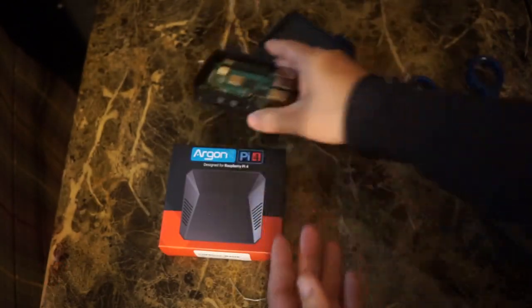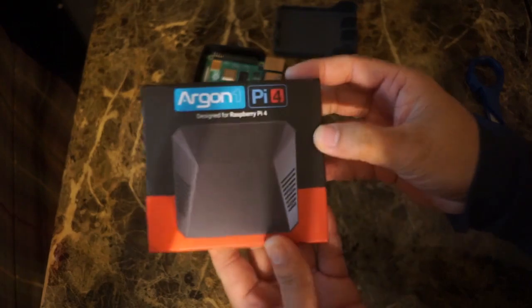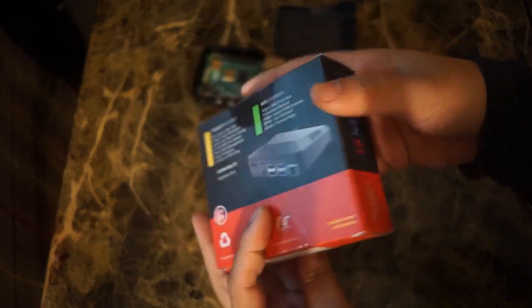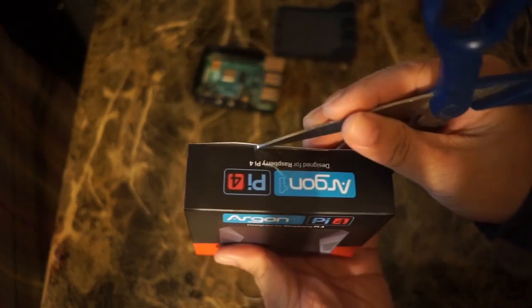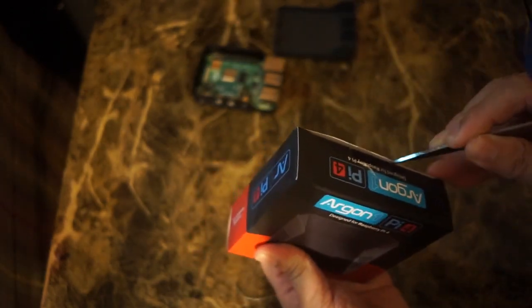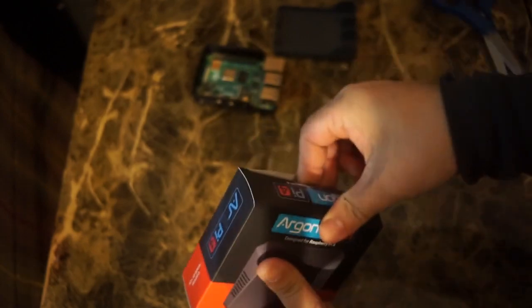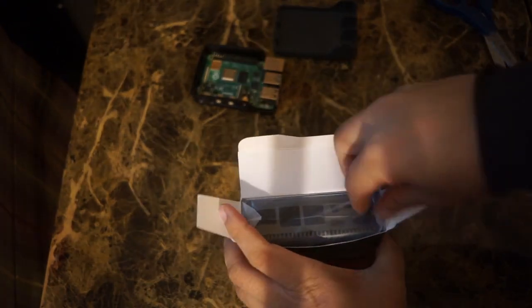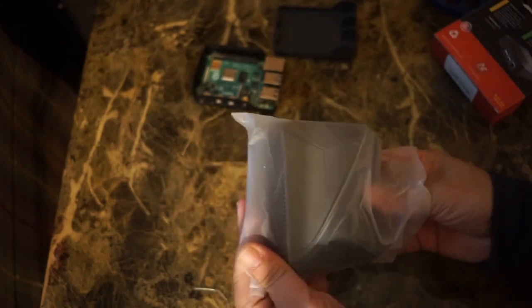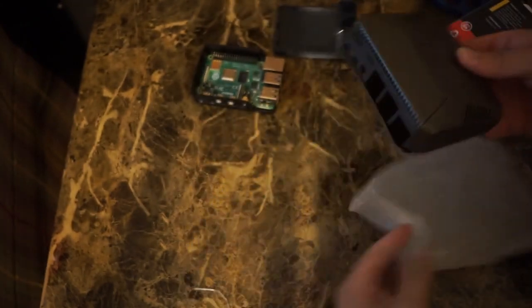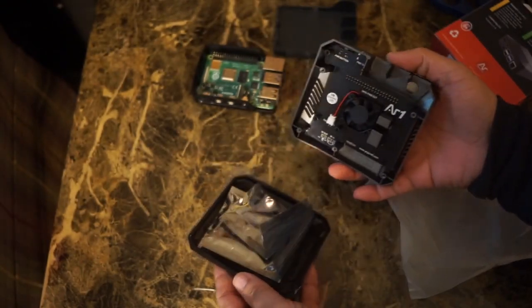I'm going to replace my old Raspberry Pi case with the Argon ONE Pi 4 case. This case solves two of my biggest complaints: my Pi overheats, so this comes with a fan, and it also comes with an on-off switch, which after four generations of the Pi still doesn't have an on-off switch. This case has an on-off switch and a fan, which I'm very excited about.